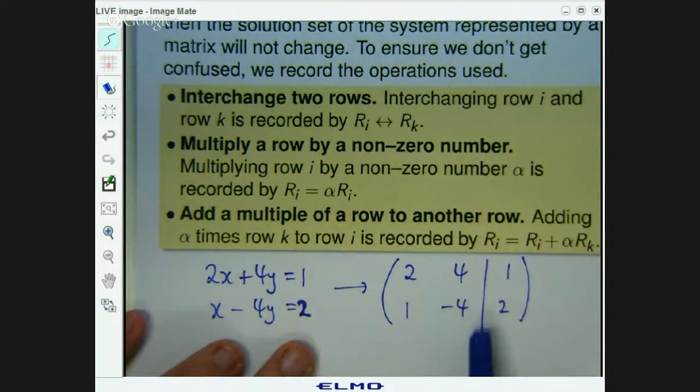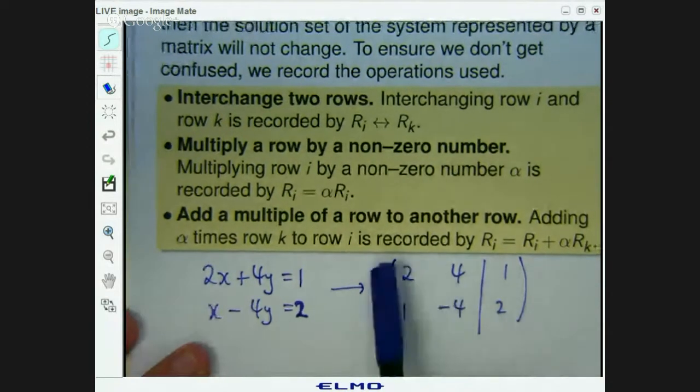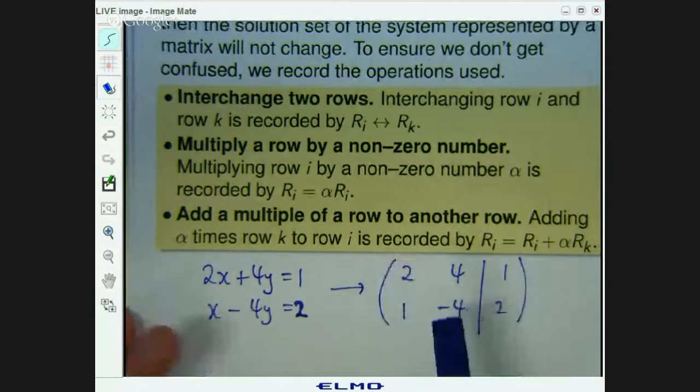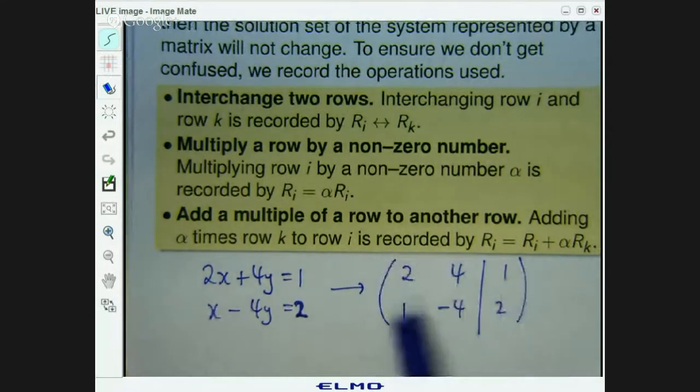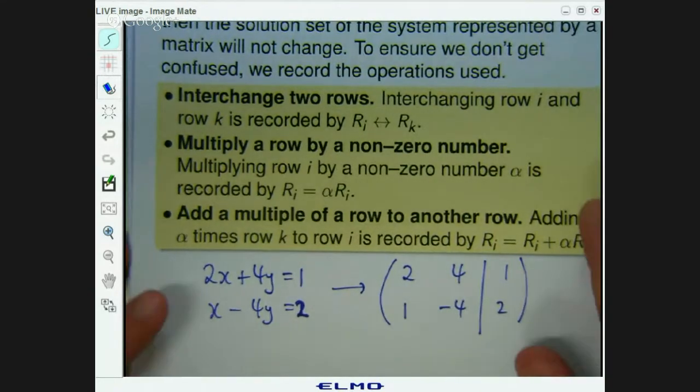Now, this line sort of plays the role of these equal signs, I guess. Okay. Now, what we're going to learn how to do is look at these rows and work with these rows to see how we can simplify this augmented matrix and make some conclusion about our system.